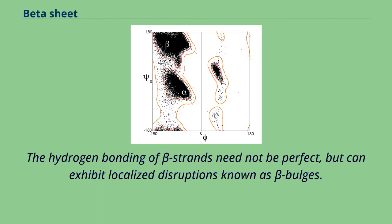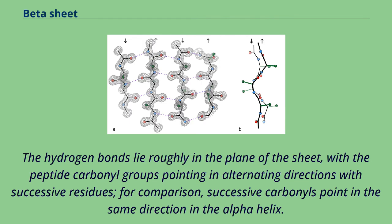The hydrogen bonding of beta strands need not be perfect, but can exhibit localized disruptions known as beta bulges. The hydrogen bonds lie roughly in the plane of the sheet, with the peptide carbonyl groups pointing in alternating directions with successive residues.